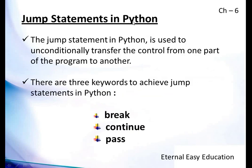What are jump statements in Python? A jump statement in Python is used to unconditionally transfer control from one part of the program to another. There are three keywords to achieve jump statements in Python: break, continue, and pass.